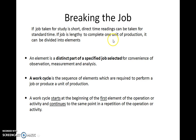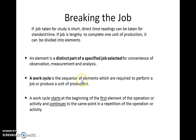If the job is lengthy to complete one minute of production, it can be divided into elements. An element is for our convenience of observation, measurement and analysis. A work cycle can be divided into small elements, and a work cycle is nothing but a sequence of elements which are required to perform a job or to produce a unit of production.